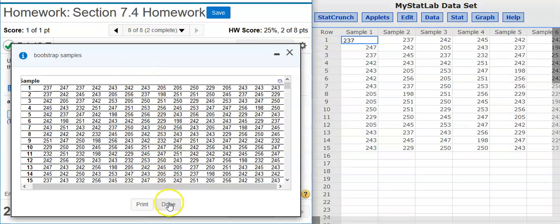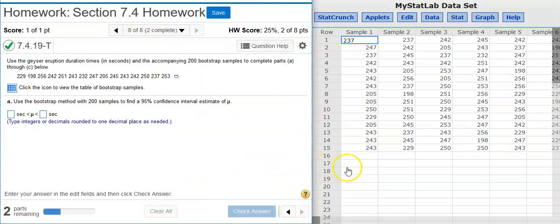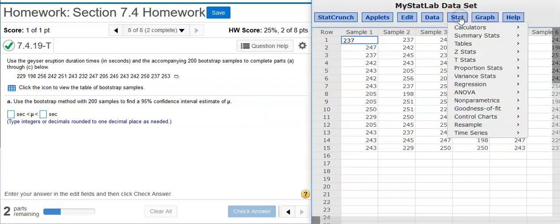Now here in StatCrunch, I'm going to calculate the mean value for each of these 200 samples. The reason why I'm calculating the mean is because that's the parameter we're looking at for the population. We're looking for the population mean. So I want to calculate the mean for each of these different samples. To do that, I go to Stat, Summary Stats, Columns.